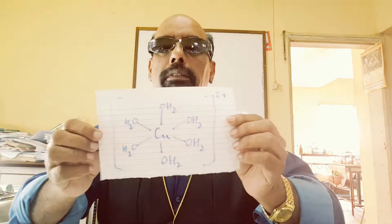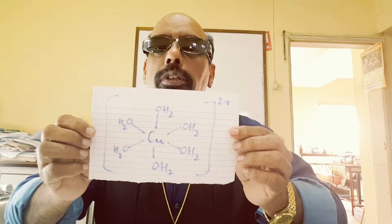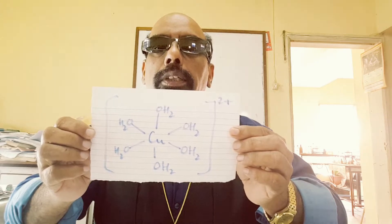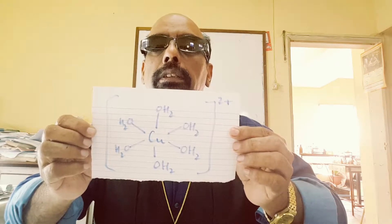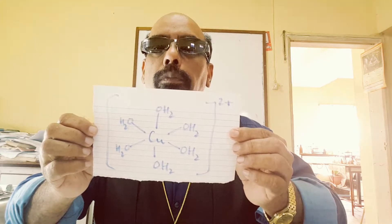Hydrated copper-2 ions are, in fact, complex ions. They contain water molecules datively bonded to the copper ions. Six water molecules are datively bonded to the central copper ion, forming [Cu(H2O)6]2+.